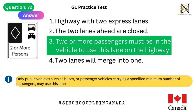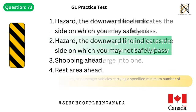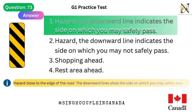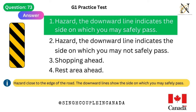Question 73. This traffic sign means: 1. Hazard — the downward line indicates the side on which you may safely pass. 2. Hazard — the downward line indicates the side on which you may not safely pass. 3. Shopping ahead. 4. Rest area ahead. Answer is 1. Hazard — the downward line indicates the side on which you may safely pass. Hazard close to the edge of the road — the downward lines show the side on which you may safely pass.